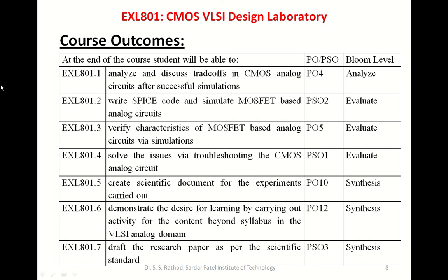CO4 is: student will be able to solve issues via troubleshooting CMOS analog circuits — mapped to program specific outcome one related to troubleshooting, Bloom's level evaluation. CO5 is: student will be able to create a scientific document for experimentation carried out — mapped to program outcome 10, Bloom's level synthesis. CO6 is: student will be able to demonstrate the desire for learning by carrying out activity for content beyond syllabus in the VLSI analog domain — mapped to PO12 lifelong learning, Bloom's level synthesis. CO7 is: student will be able to draft a research paper as per scientific standards — mapped to program specific outcome three, Bloom's level synthesis.